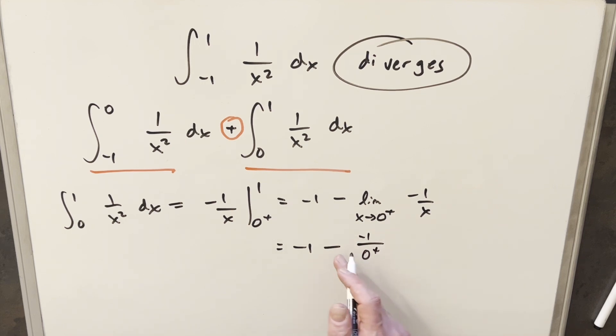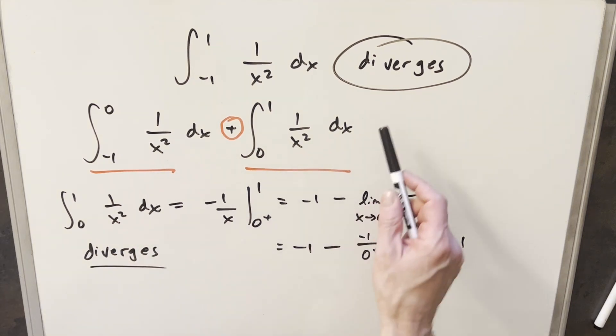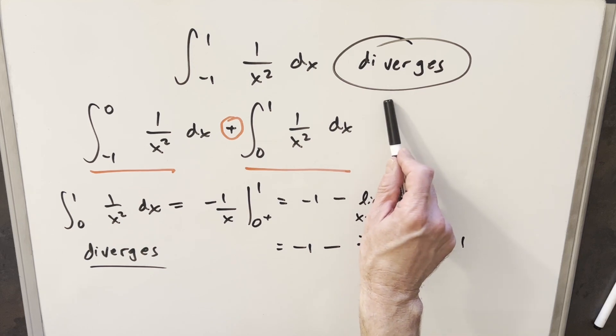This is going to be minus infinity, but we have a minus in front of it. So again, it's the same thing. It's going to be this infinity minus 1. So again, we say this integral here from 0 to 1 diverges. And so in this case, we could have started with either one and we come to the same conclusion that this integral diverges.